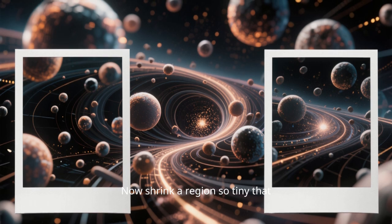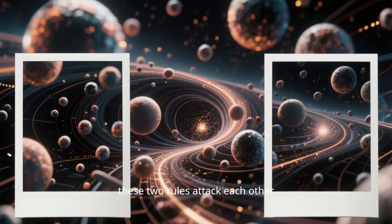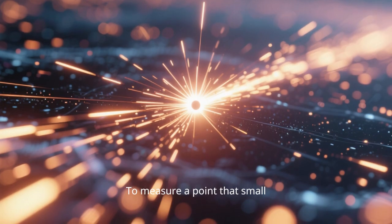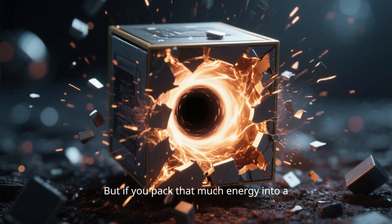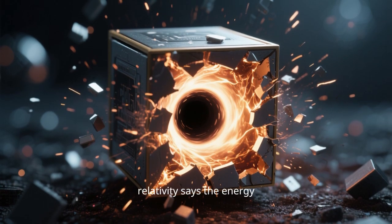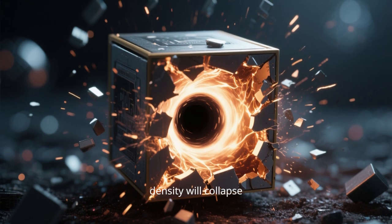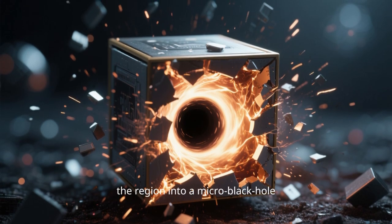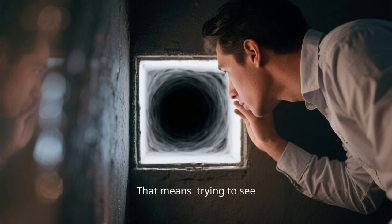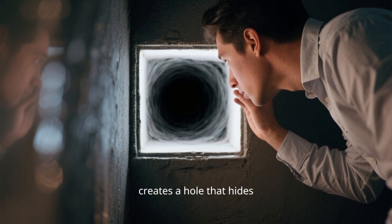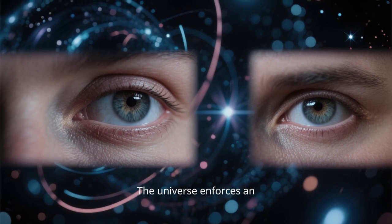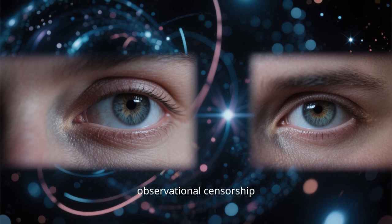Now shrink a region so tiny that these two rules attack each other. To measure a point that small, you would need an absurdly high-energy photon. But if you pack that much energy into a Planck-sized box, relativity says the energy density will collapse the region into a micro-black hole. That means, trying to see smaller literally creates a hole that hides what you are trying to see.